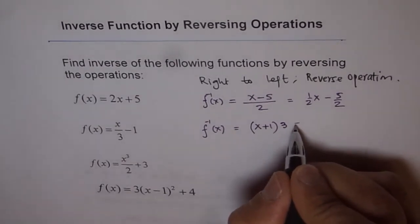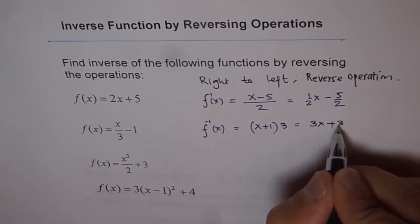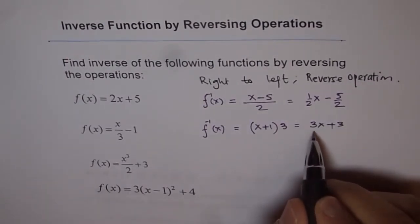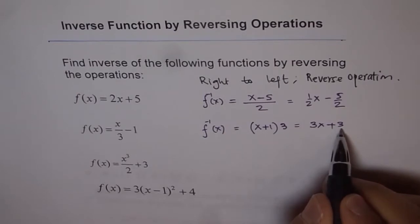Which if you like to, you can write as 3 times x plus 3 where it is a line with slope of 3 and y intercept of also 3.